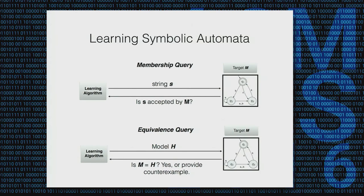When the learning algorithm queries the target program, it makes a membership query — it sends an input and asks whether that input is accepted. In the web application firewall or browser domain, you can ask: is that string malicious, or is it parsed as JavaScript? Then there is the equivalence query, the most expensive part, where you basically send the model and check it for correctness. If found incorrect, you get back a counter-example which you use to update and improve the model.